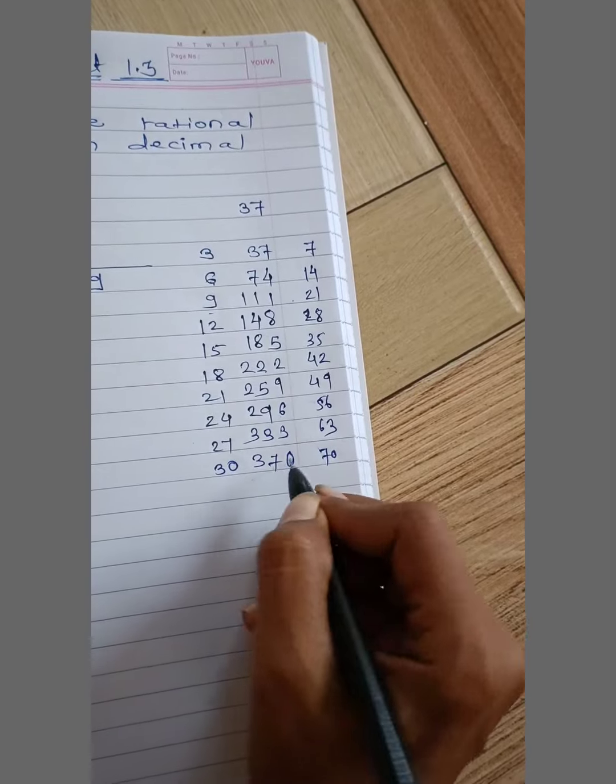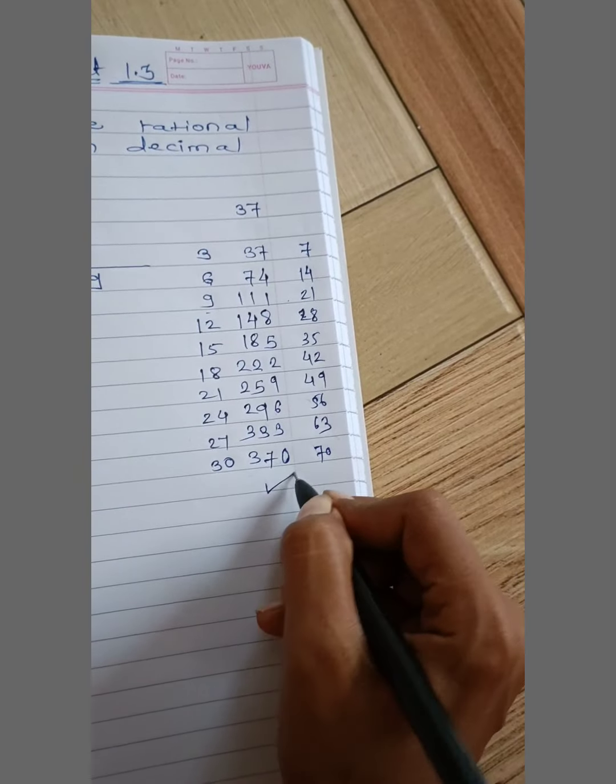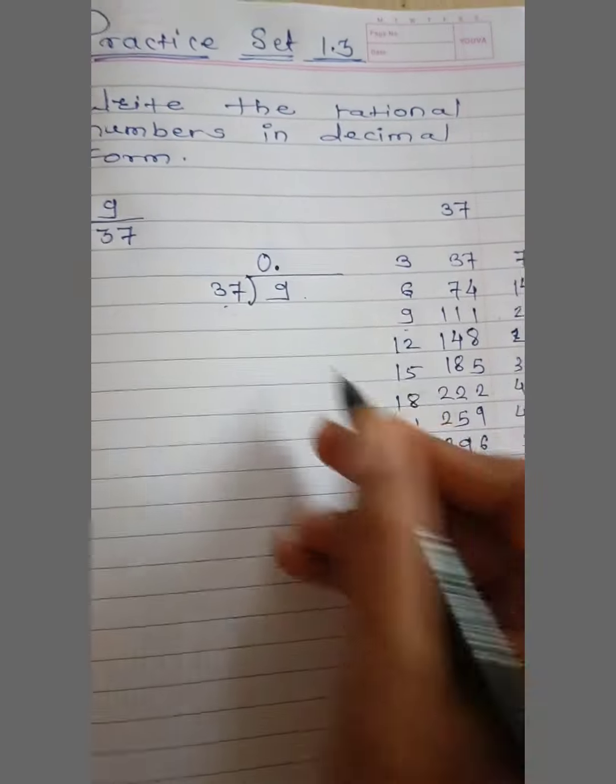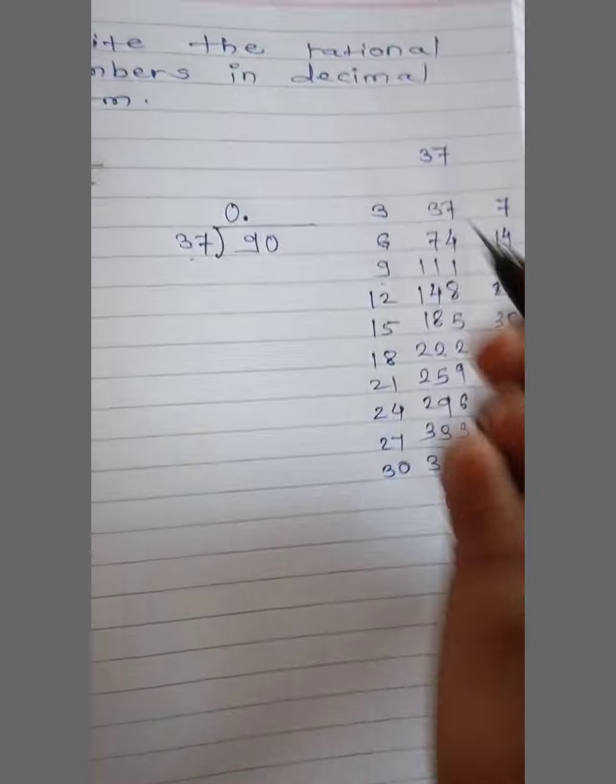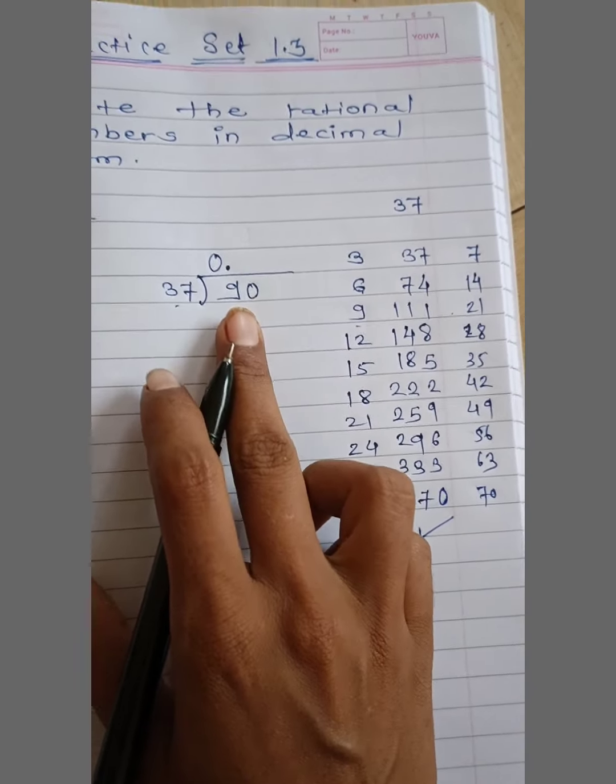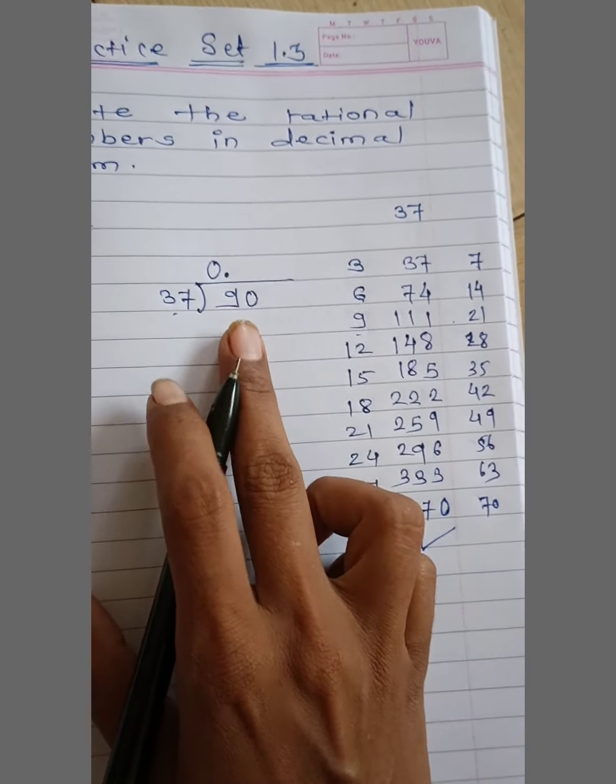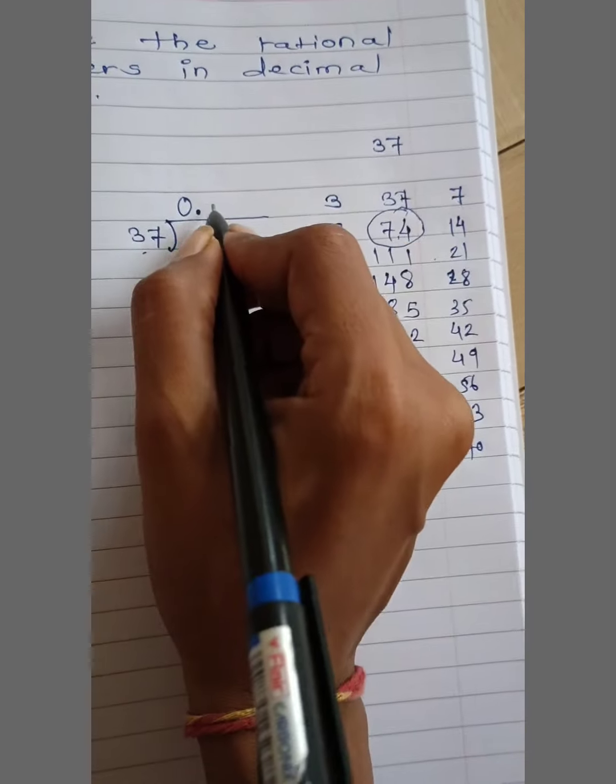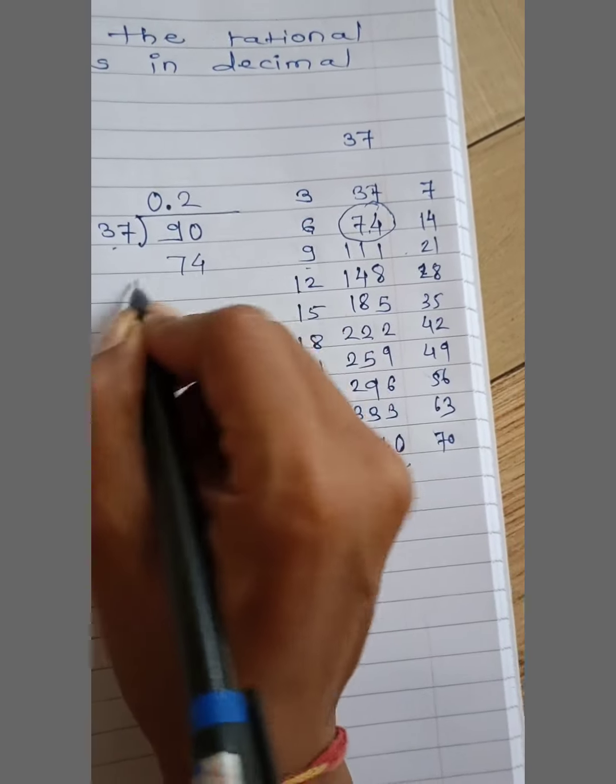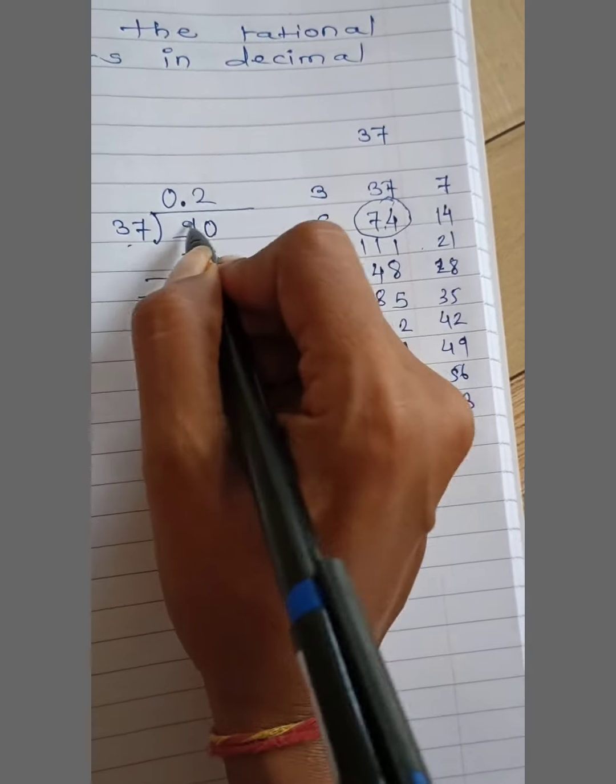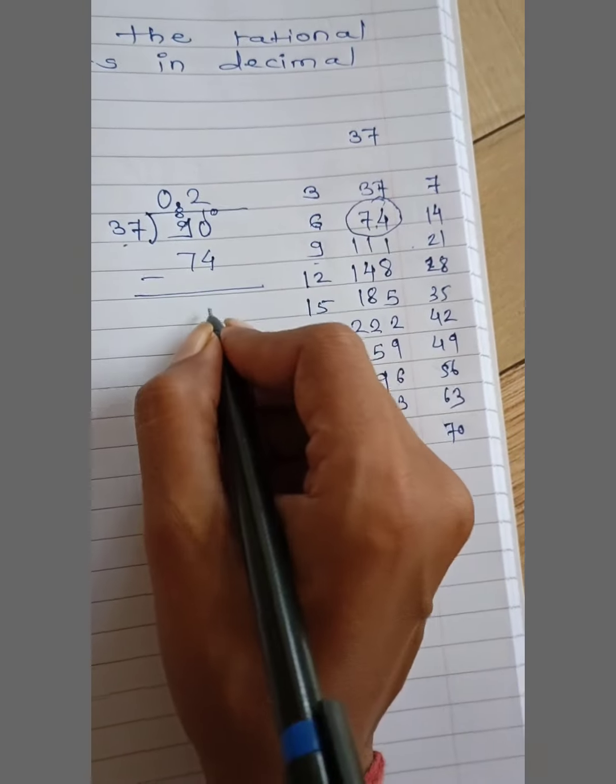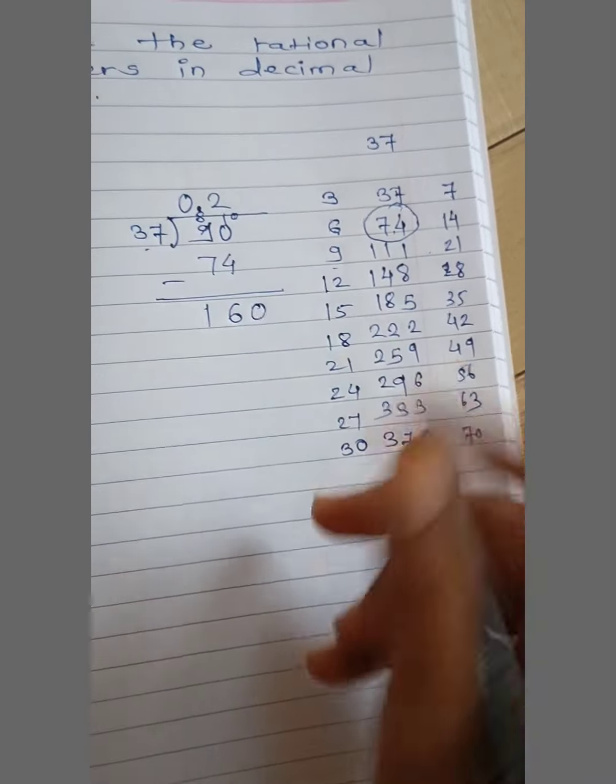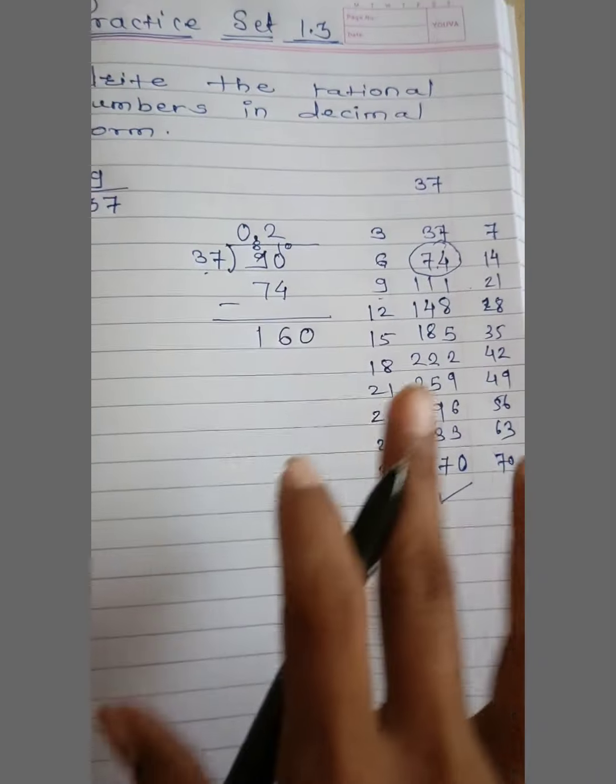Then 8, 8. Then 10 minus 4, 6. Then 8 minus 7, 1. Here, 160. Then 160 small number dikhna hai.